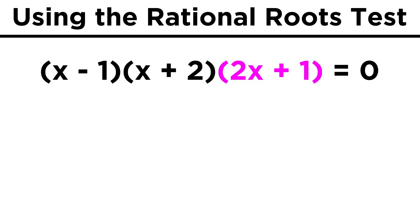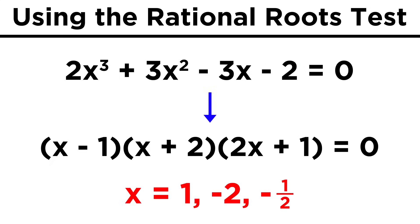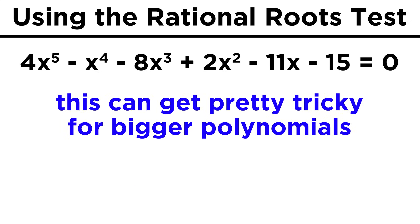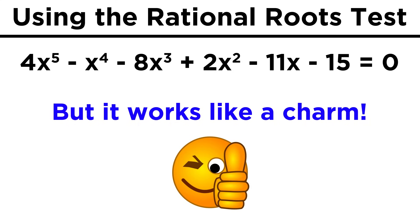Looking at this last binomial, it is clear that if we solve this term by itself, we get negative one half, and so the three zeros, or solutions, of this cubic are one, negative two, and negative one half. You can imagine how this can get much trickier for quartics or quintics, especially if the rational roots test gives us a long list of possible zeros to try. But it does give us a rigorous way to solve for these tricky higher degree polynomials, which is indeed an impressive feat, so let's check comprehension.